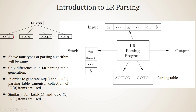The algorithm for all four types of LR parsers is the same. The only difference is in the LR parsing table generation. LR parsers are table driven. To generate LR0 and SLR1 parsing tables, canonical collections of LR0 items are used. For LALR1 and CLR1, LR1 items are used.